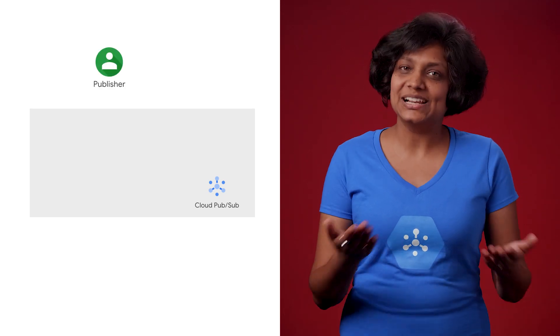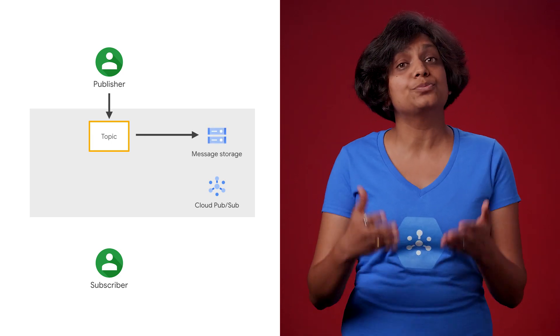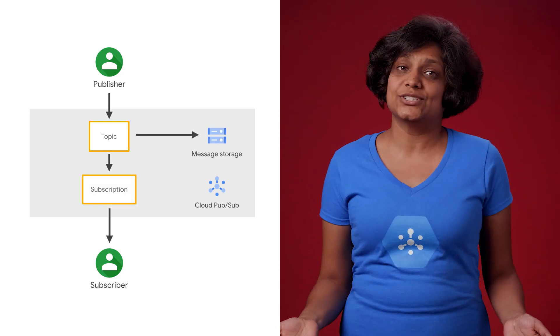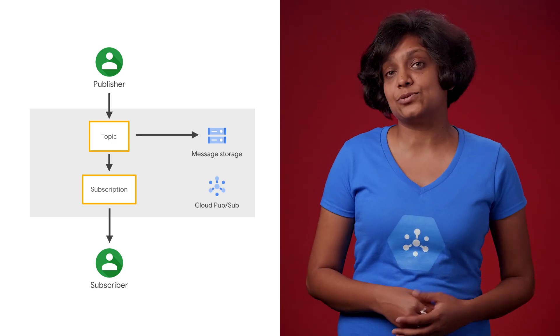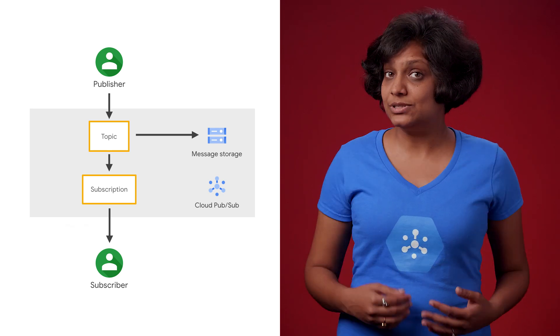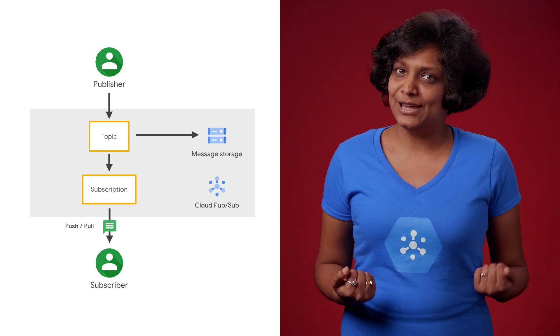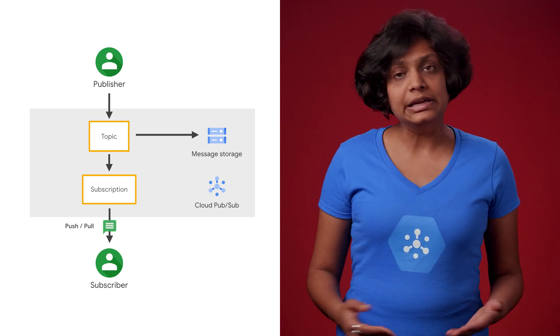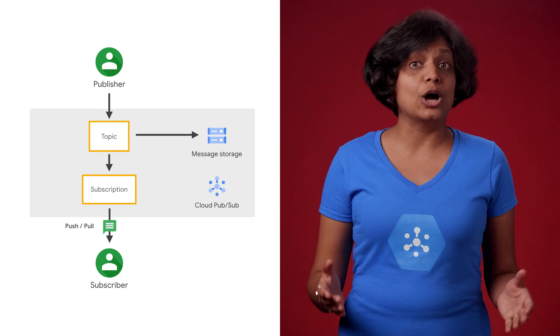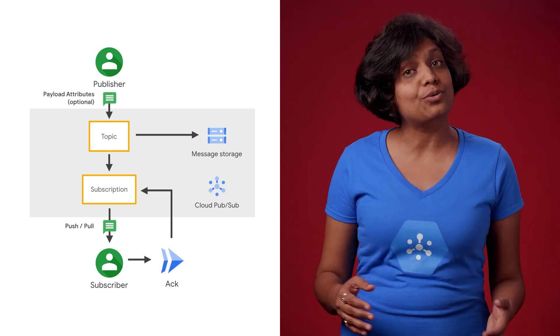As the name Pub/Sub indicates, Cloud Pub/Sub supports a publisher-subscriber model. A publisher application creates and sends messages to a topic, which is a named resource, and the messages are stored until acknowledged by all subscribers. To receive these messages, a subscriber application creates a subscription to a topic. The subscriber receives a message by either Cloud Pub/Sub pushing them to the subscriber's chosen endpoint, or by the subscriber pulling them from the service. When a message is acknowledged by the subscriber, it is removed from the subscription backlog and not delivered again. The message itself can contain the payload and optional attributes that describe the payload content.